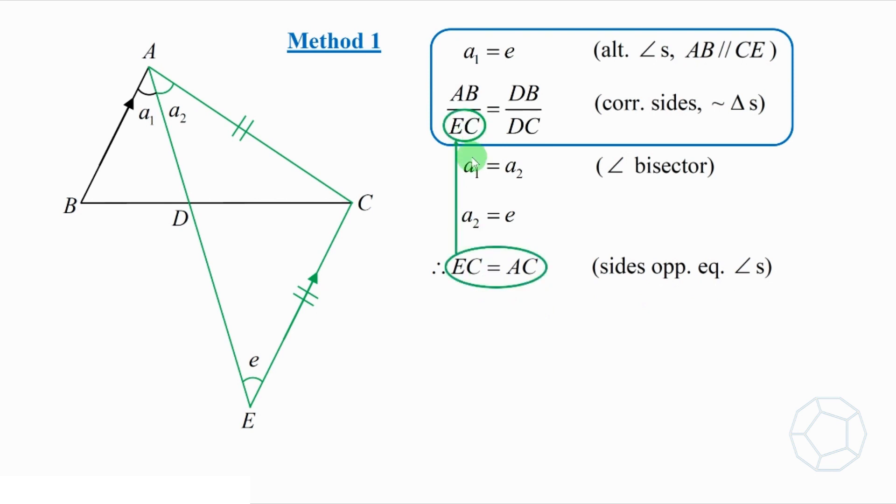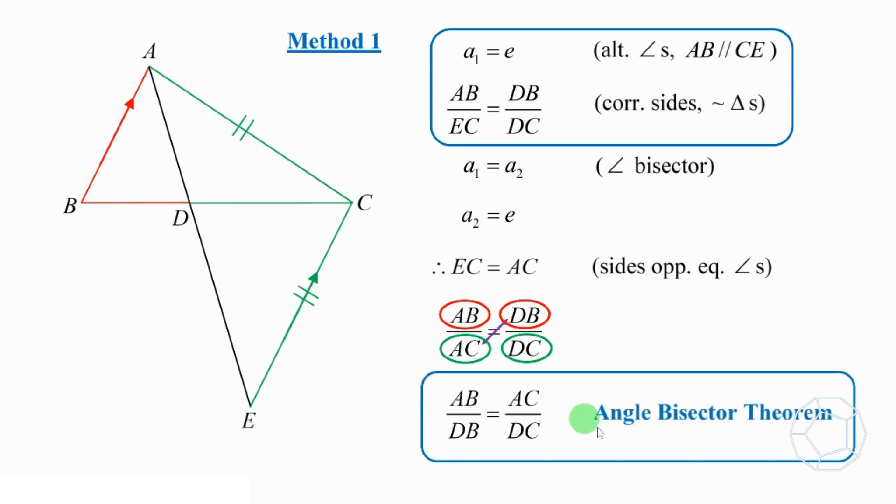Putting this result into the ratio, we'll have AB over AC is equal to DB over DC. Well, the two red sides AB and DB are in the numerator, and the two green sides AC and DC are in the denominator. Rearrange the terms AC and DB, we complete the proof of angle bisector theorem.